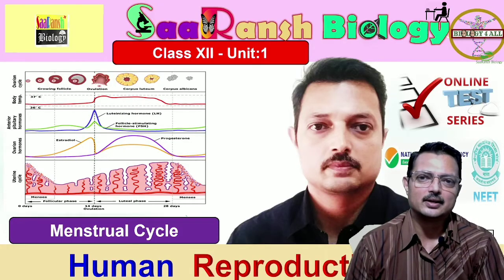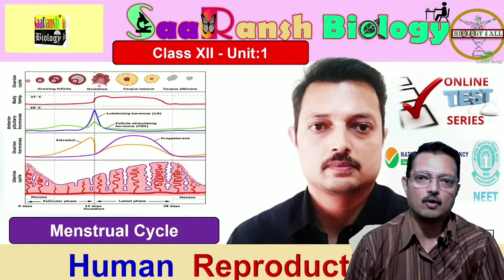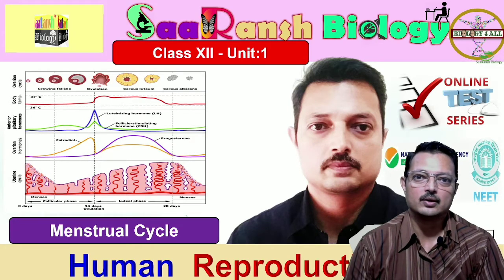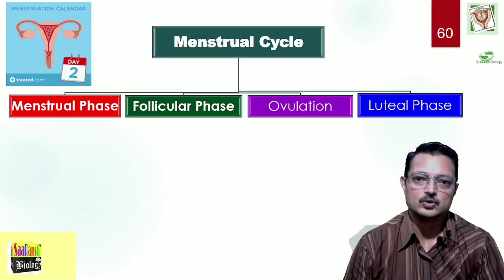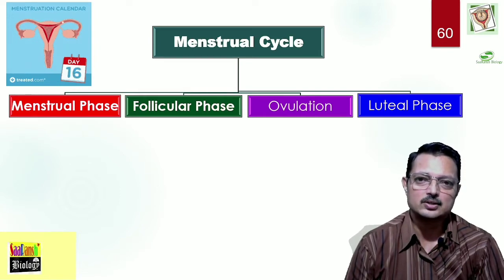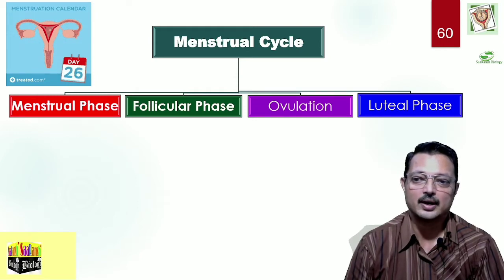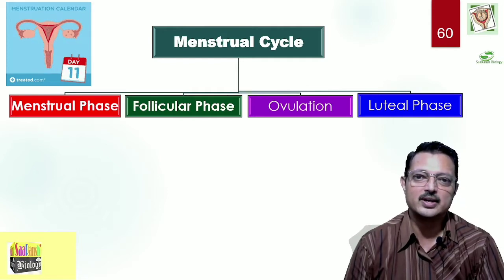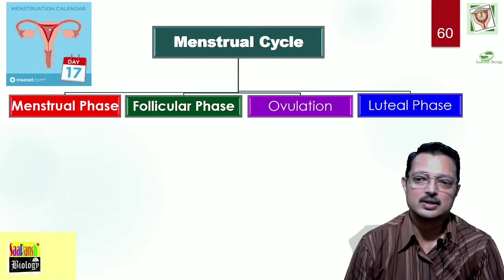This cycle is an interplay of various hormones. Apart from that, the endometrium and the ovary also play their role. We will understand the cycle according to the various concepts involved in it, but broadly we will read it under four heads: menstrual phase, follicular phase, ovulation, and luteal phase. These 28 days may be divided under these four sub-phases.